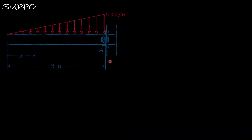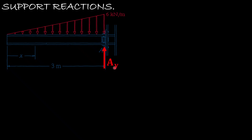The first step is to find the support reactions before proceeding to find the internal shear force and internal net moment as a function of x. We have a fixed support, which restricts movement in the vertical direction — giving us A sub y — and in the x direction — giving us A sub x — and it also restricts rotation, so we have a moment at A, which we assume is clockwise.